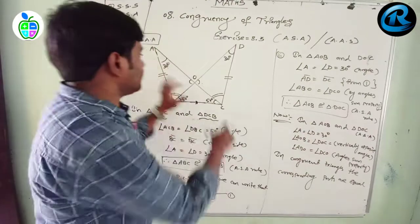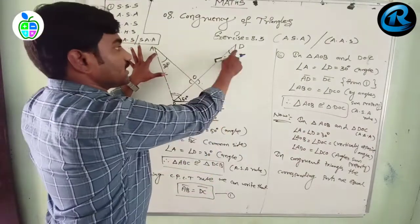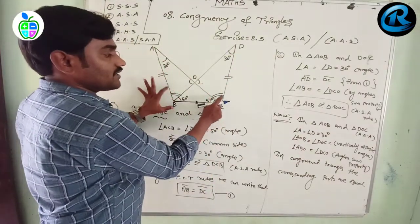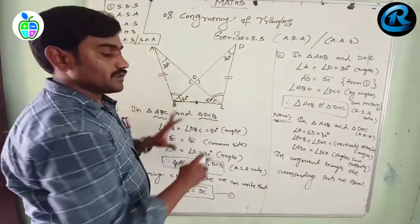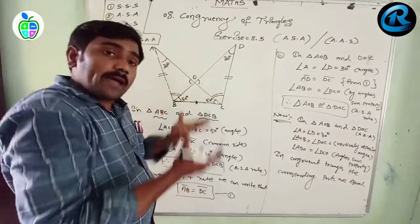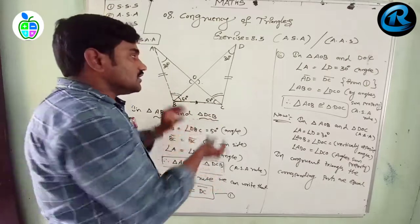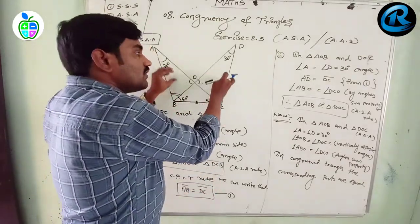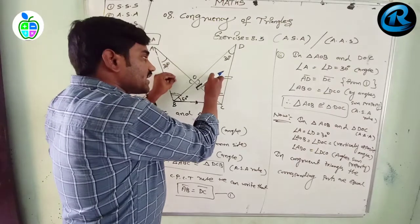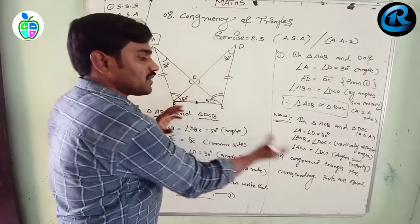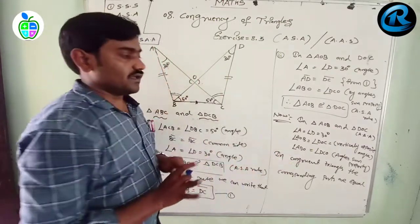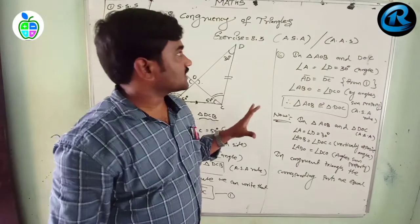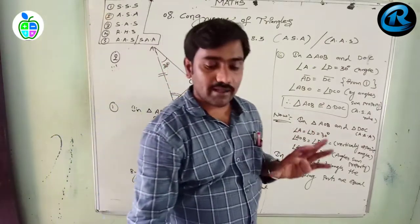Since these two triangles are congruent, by CPCT the corresponding parts are equal: angle A equals angle D, angle O equals angle O, and angle B equals angle C. This completes exercise 8.3.